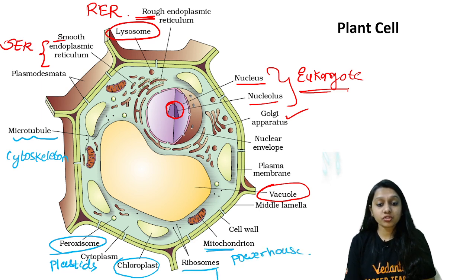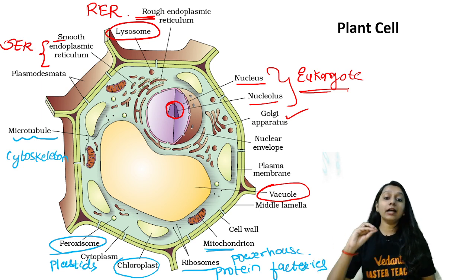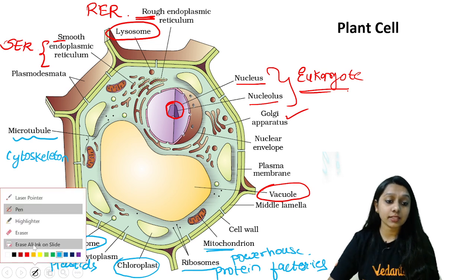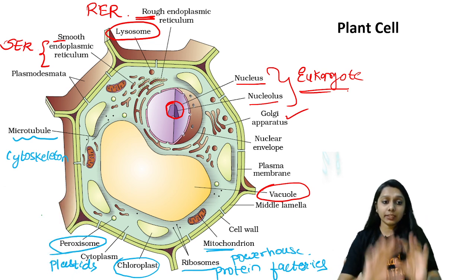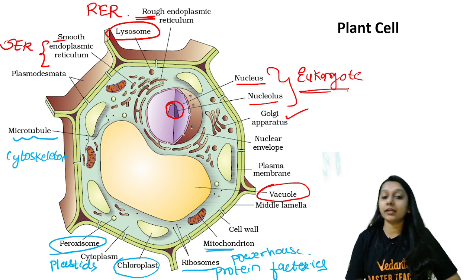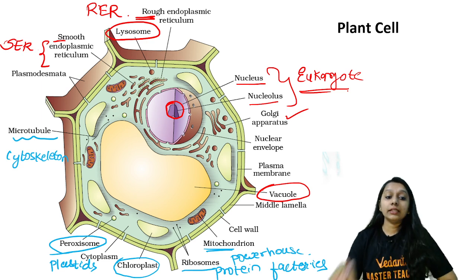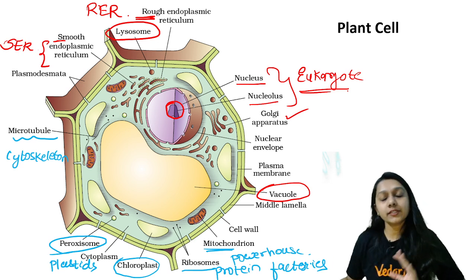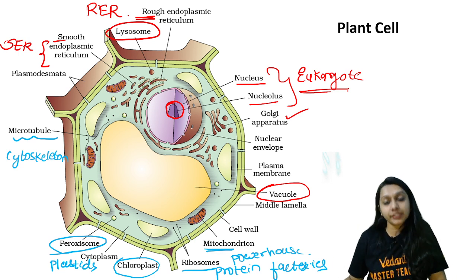Ribosomes, which we call protein factories of the cell. Now, what are you different from? These things we have noted: ER, SER, Golgi Bodies, Vacuole, Plastids, Chloroplasts, Ribosomes, Mitochondria — these are only what you get in the eukaryotic cell. One thing that you get in plant cells but not the rest is the cell wall and middle lamella — the cell wall especially, which is made of cellulose, and the middle lamella, which connects neighboring two cell walls.